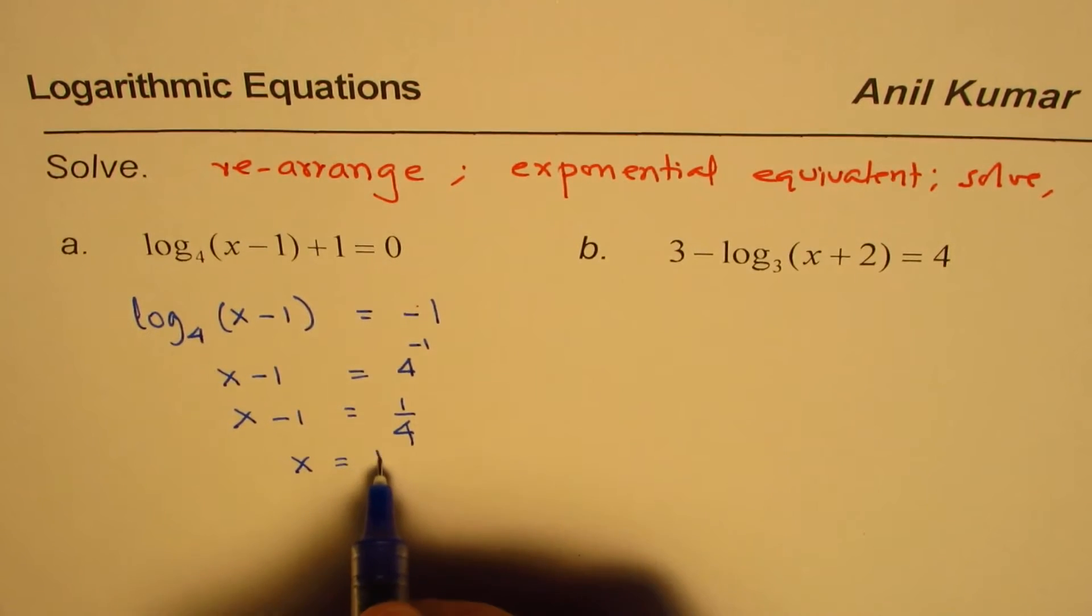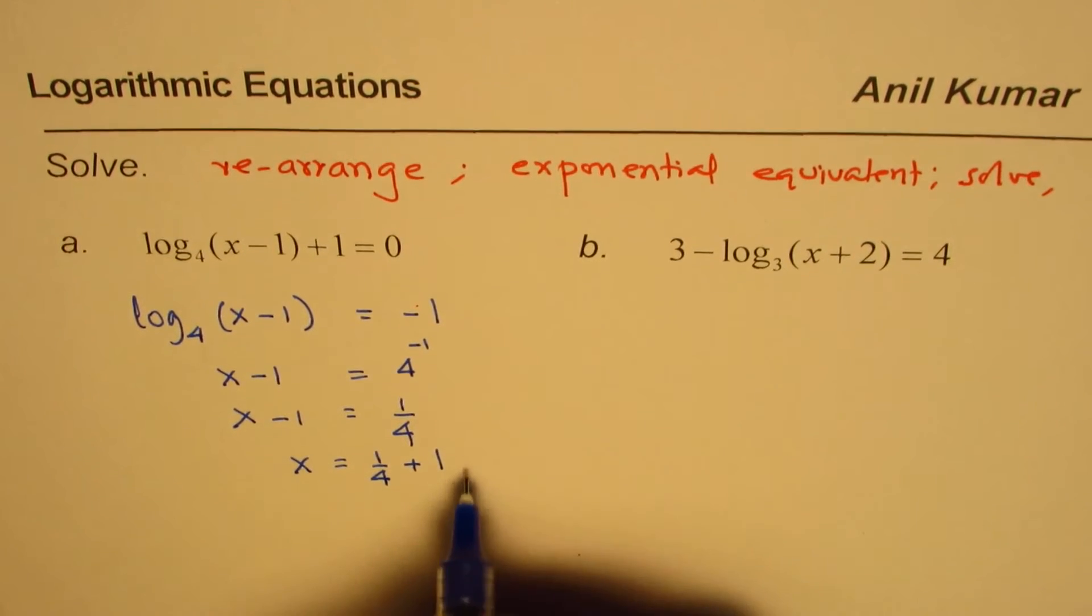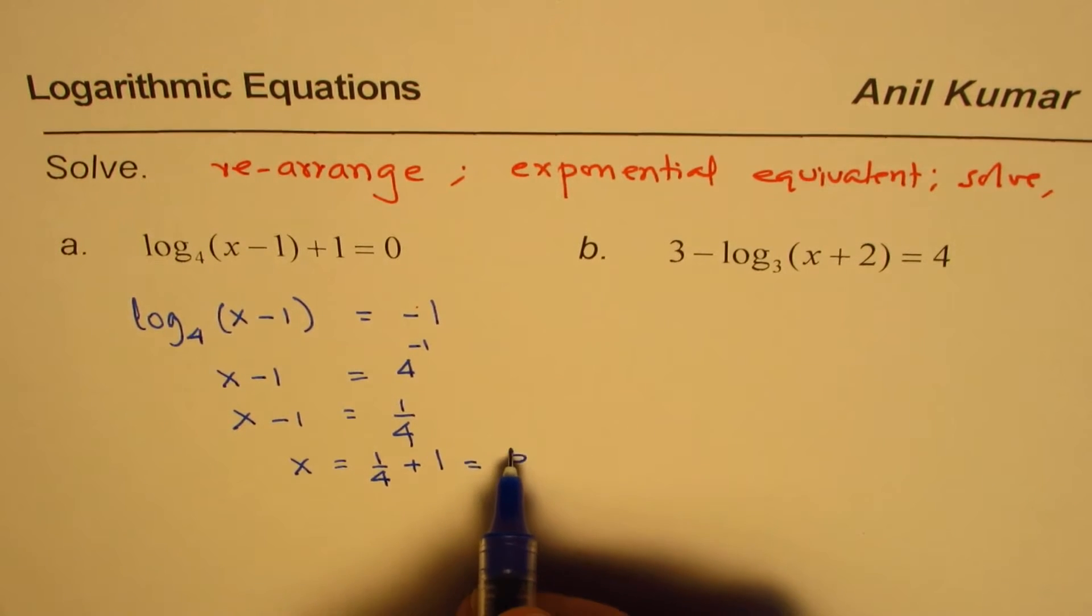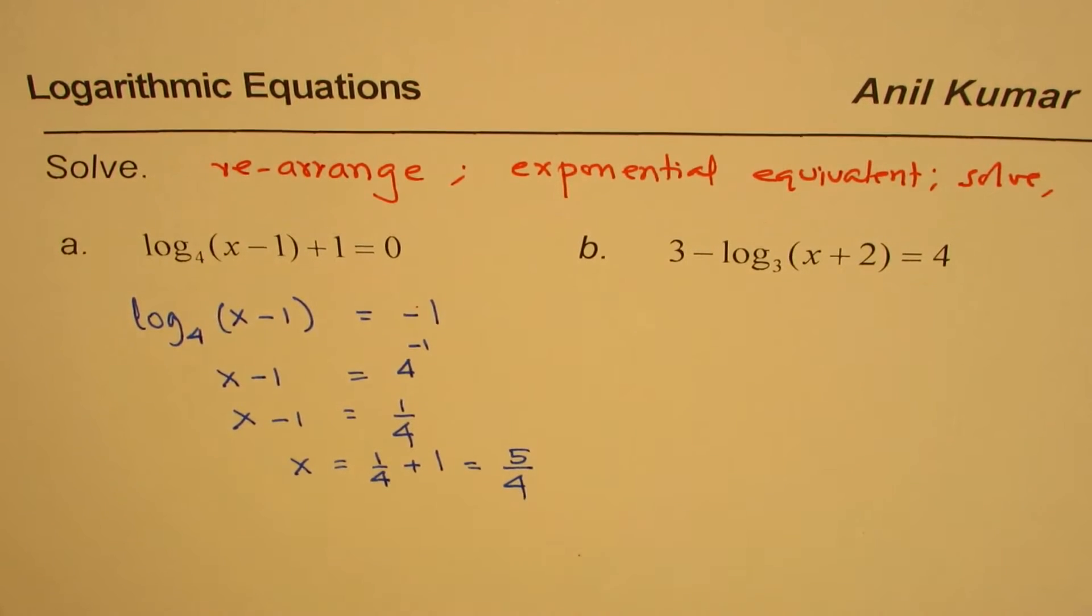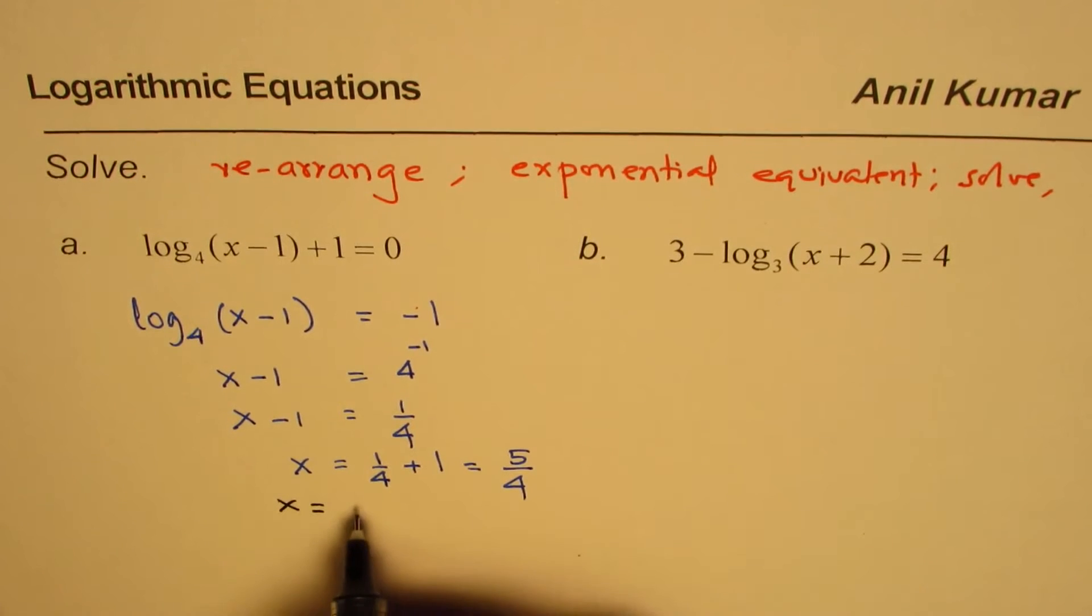So x is equals to 1 over 4 plus 1. You can take 4 common denominator. 4 plus 1 is 5, you get 5 over 4 as your answer. So our solution here is x equals to 5 over 4.